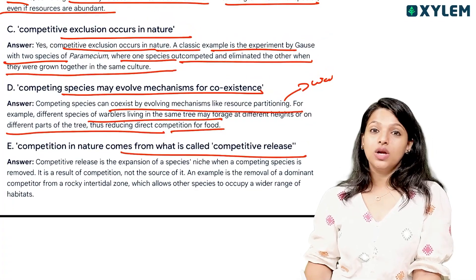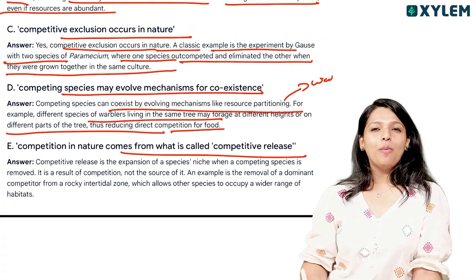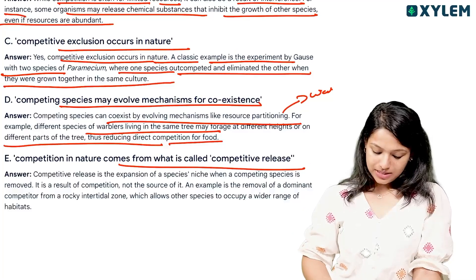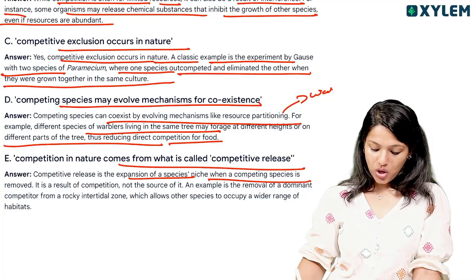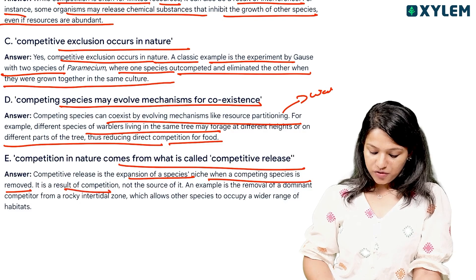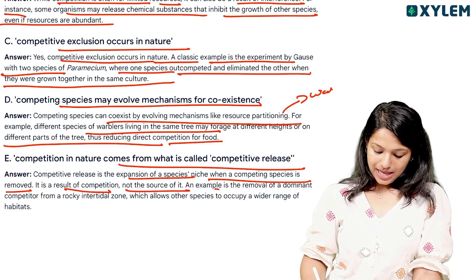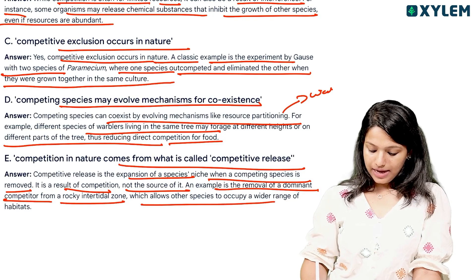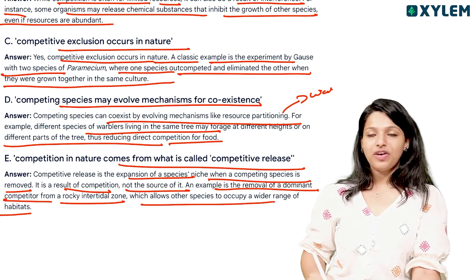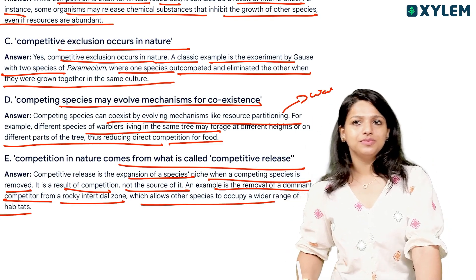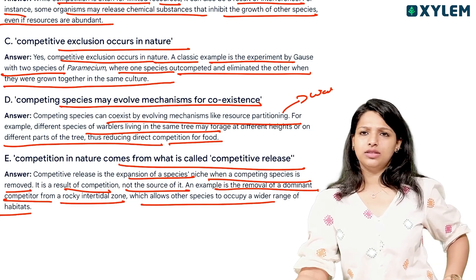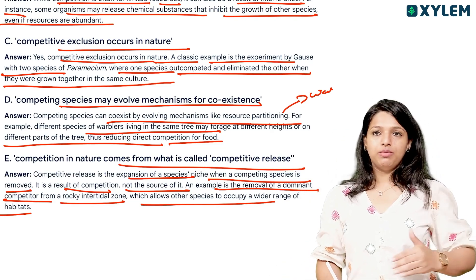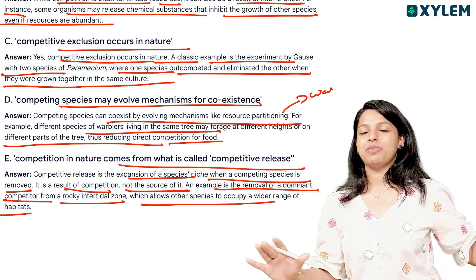Competition in nature also leads to what is called competitive release — the expansion of a species' niche when a competing species is removed. For example, the removal of a dominant competitor from a rocky intertidal zone allows other species to occupy a wider range of habitat.